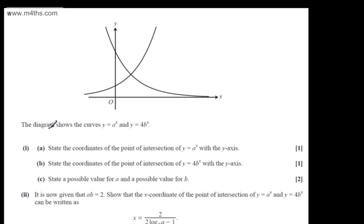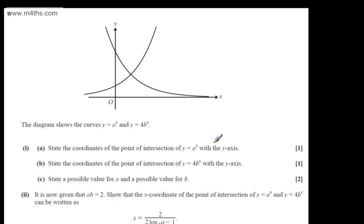This is question number 8. We're told the diagram shows the curves y equals a to the x and y equals 4b to the x. In the first part of the question, part a for one mark asks us to state the coordinates of the point of intersection of y equals a to the x with the y axis.